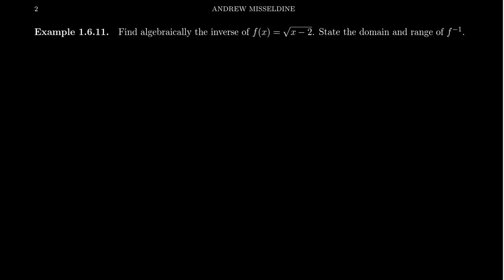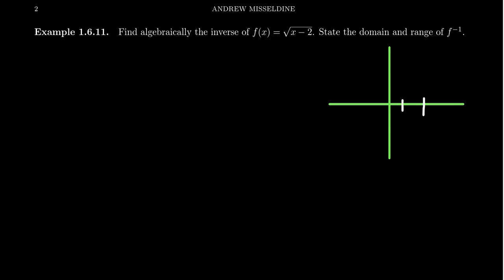Let's find algebraically the inverse of the function f of x equals the square root of x minus 2. This function is our standard square root function, but it's been shifted to the left by 2 because of the x minus 2 inside of the square root, and our graph would look something like this.